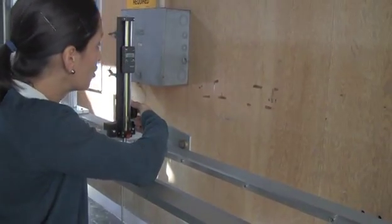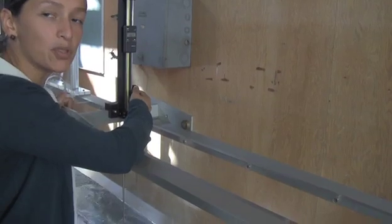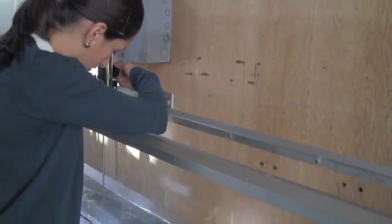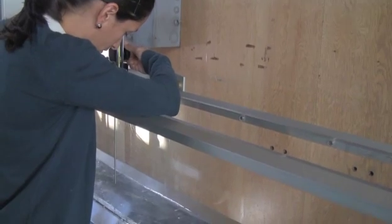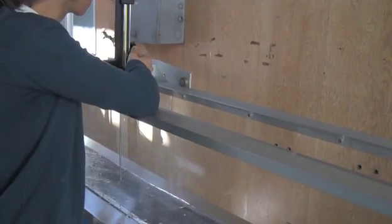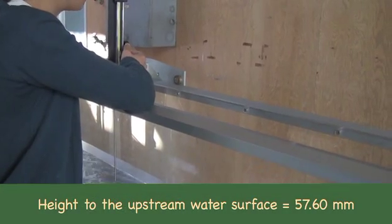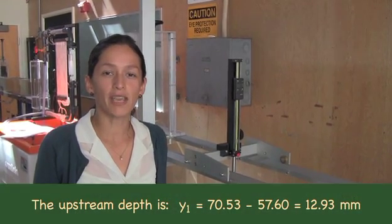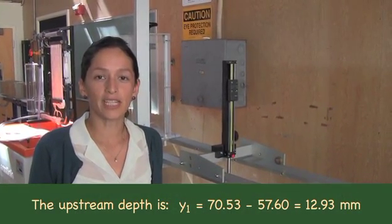Now we are going to measure the height to the upstream water surface. The height is 57.16 millimeters. The upstream depth is 12.93 millimeters.